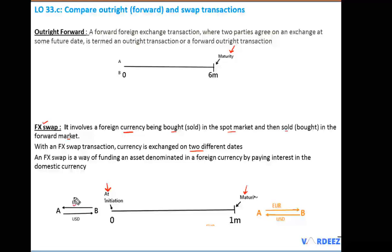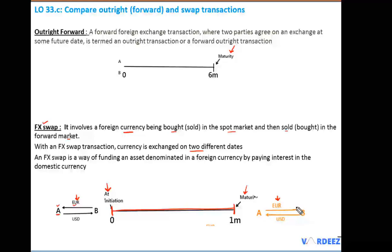Let's take this example: A needs euros to fund its operations in Europe. He'll go to his domestic bank in the US, borrow the USD, and transfer it to B. In exchange, B gives the much-needed euros to counterparty A. At day zero itself, both counterparties also enter into an outright forward contract for about a month. At maturity, the reverse transaction happens — A bought euros at initiation, so at maturity A sells the euros back to counterparty B.